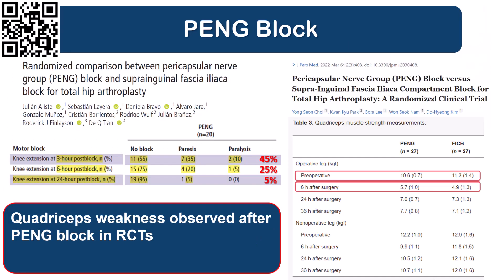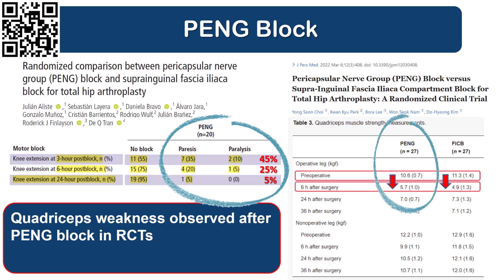This inadvertent spread through the iliopsoas is likely what explains the fact that quadriceps weakness is observed in most studies of the PAIN block, although usually, but not always, to a lesser extent than the femoral nerve or fascia iliaca block. The investigators may not have been as vigilant for intramuscular spread, or in the interest of adhering to study protocol, injected the full volume anyway.